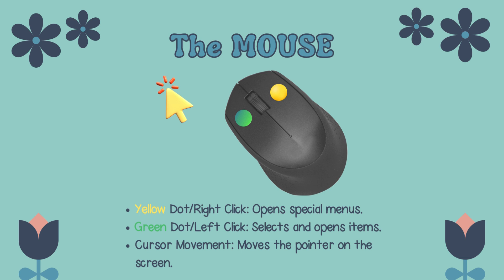The mouse. The yellow dot represents a right click, and it opens special menus. The green dot represents a left click, and it selects and opens items. The mouse is in charge of the cursor movements.